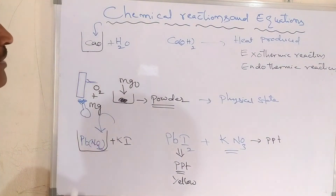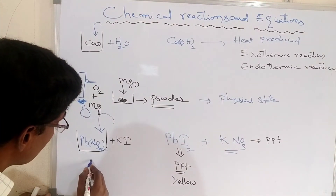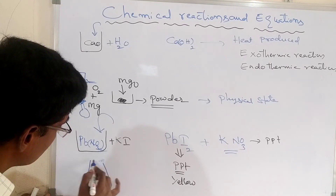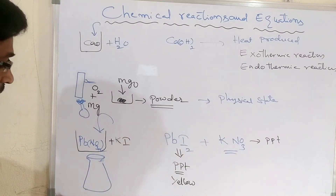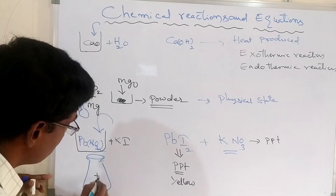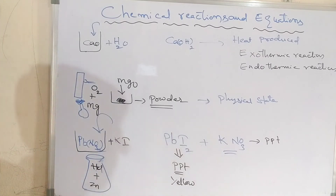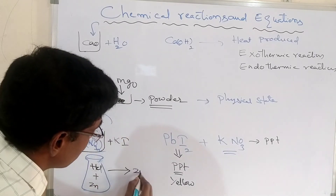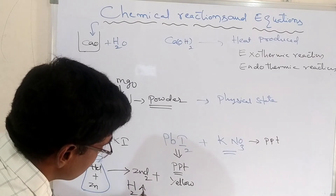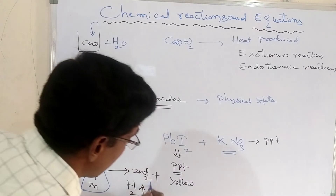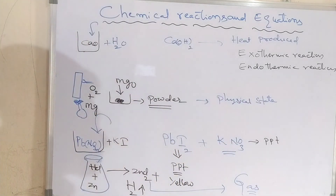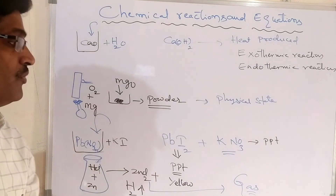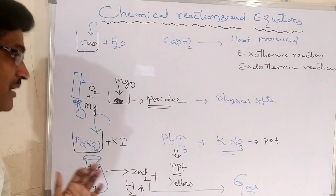One more example to show a chemical reaction: take a conical flask and add zinc granules to it. Then add hydrochloric acid (HCl). When the reaction takes place between zinc and HCl, it gives zinc chloride (ZnCl₂) plus hydrogen gas (H₂). A gas is evolved. So, while chemical reaction: heat is produced, physical state changes, a precipitate is formed, and a gas is evolved.